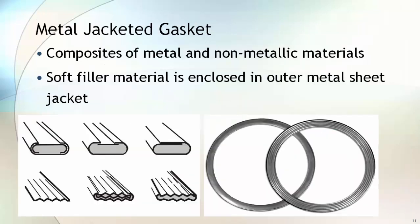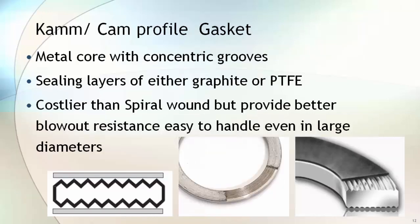In a metal jacketed gasket, soft filler material is enclosed in a thin sheet of metal jacket. There are different ways to cover the filler material as shown in the image. Metal jacketed gaskets are commonly used in heat exchangers. A cam profile gasket has a solid metal core with concentric grooves, and filler material — either graphite or PTFE — is layered on this grooved metal ring. It is costlier than spiral wound gaskets but provides better blowout resistance and is easier to handle even in large diameters.